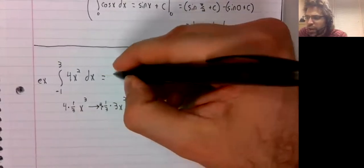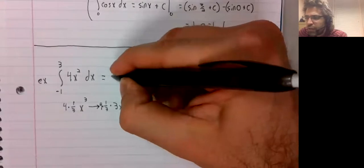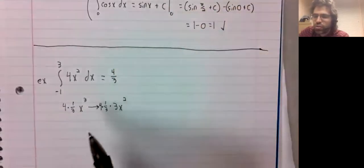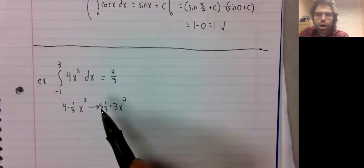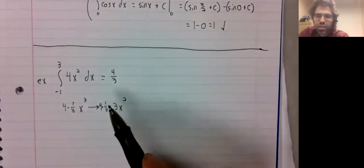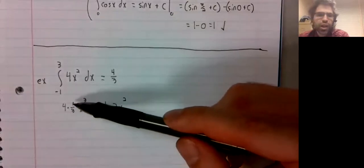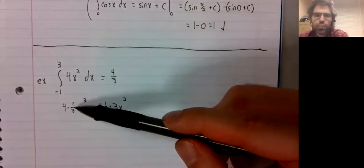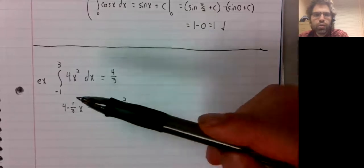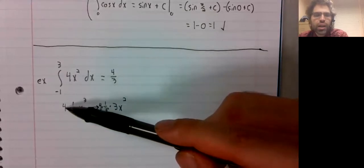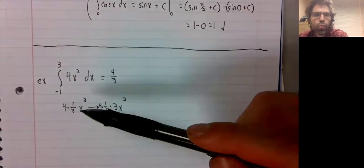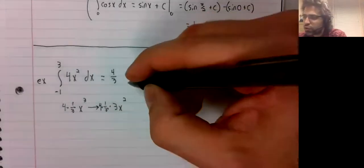I can't emphasize enough that this only works when we're adding constants. I know I've said this before, but if we multiply by a constant one third, it sticks around. If we multiply by a constant four, it sticks around.